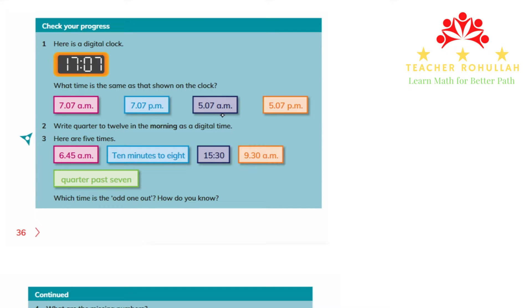Although the clock is showing 5:07, it is not in the morning — the a.m. option shows this is in the morning. The one which is exactly showing the same time is 5:07 p.m. Question one is solved.